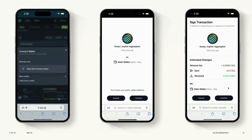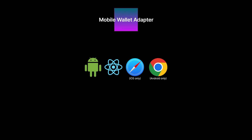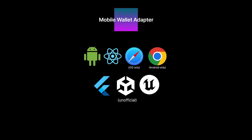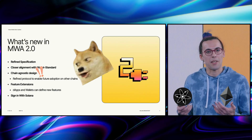Here's what the flow on Safari looks like. The user is prompted via the web app and can sign transactions using their wallet without having to jump around. There's also unofficial ports for Flutter, Unity, and the Unreal Engine, with plans to support remote devices like laptops and computers. The latest release also made MWA chain agnostic, so it's possible to use it on blockchains other than Solana.